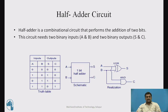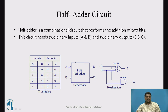A Half Adder is a combinational circuit that performs addition of two binary bits. This circuit needs two binary inputs, represented by A and B, and two binary outputs — sum and carry — represented by capital S and capital C respectively. The schematic diagram shows the Half Adder circuit with inputs A and B and outputs S and C. The truth table shows two inputs A, B and two outputs S and C, listing the values of sum and carry for all possible input combinations.